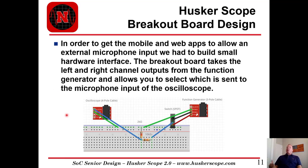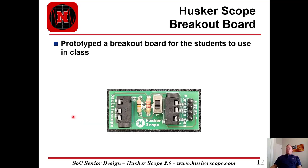Last year, in order to get our mobile and web apps to allow an external microphone input, we had to build a small circuit to not only divide the voltage to lower the value coming into our microphone, but also enable an inline resistor to allow it to accept those inputs and recognize it as a microphone. On the right, we connect our three-pole cable from our function generator and have a switch that allows us to choose left or right channel, which then gets fed into the oscilloscope. Students last year prototyped a breakout board for use in the advanced embedded systems class, shown right here.